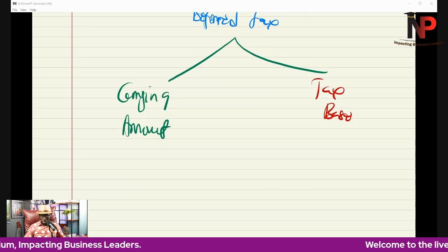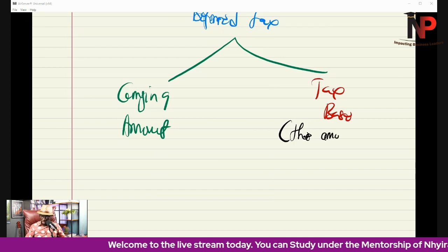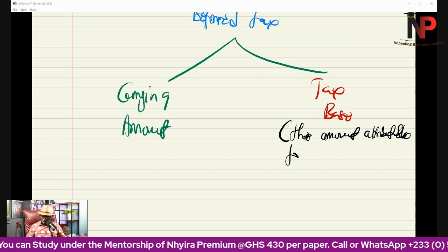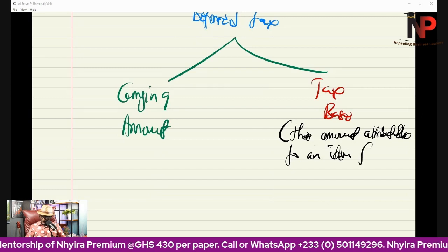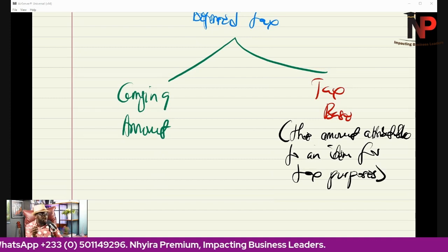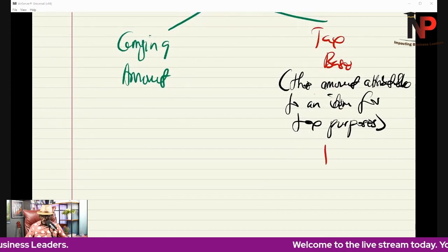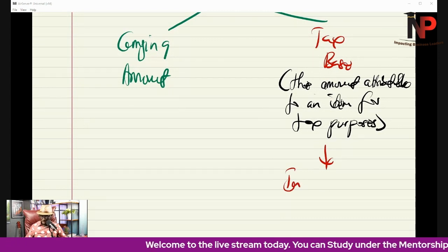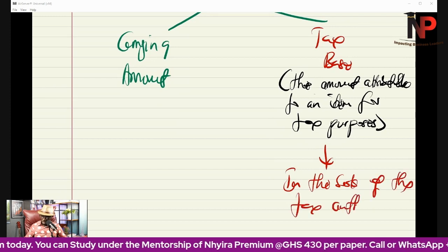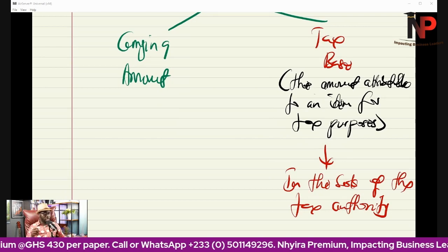The tax base is simply the amount attributable to an item for tax purposes — in other words, how the item is kept in the books of the Ghana Revenue Authority, in the books of the tax authority. So how does the tax authority see this transaction? How much are they carrying this transaction at? That is the idea about a tax base.